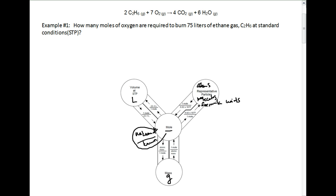Let's dive into this problem and identify some information. We're given a balanced equation — ethane burning with oxygen forming carbon dioxide and water — with coefficients 2, 7, 4, and 6. Example number one: how many moles of oxygen are required to burn 75 liters of ethane gas at standard conditions (STP)? STP means we're allowed to use the mole road. Our known quantity is 75 liters of C2H6, and that's our starting point on the mole road.